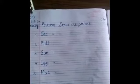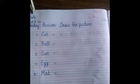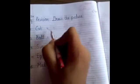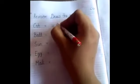Children, today we will do the revision of draw the picture. So, the first one is cat. So, we will draw the picture of a cat like this.